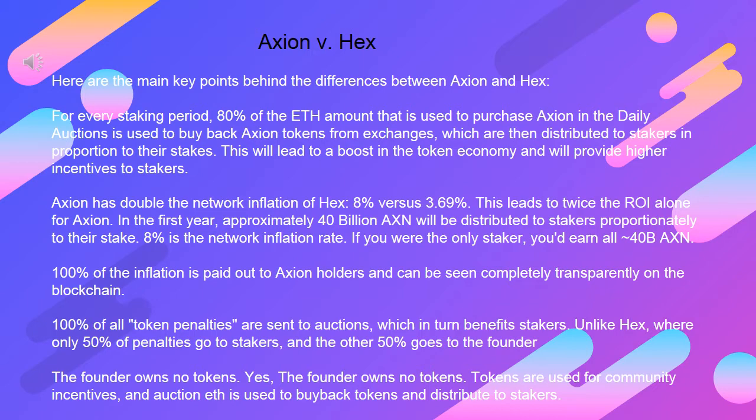For Axion in the first year, approximately 40 billion AXN will be distributed to stakers proportionately to their stake. 8% is the network inflation rate. If you were the only staker, you'd earn all 40 billion AXN. 100% of the inflation is paid out to Axion holders and can be seen completely transparently on the blockchain.